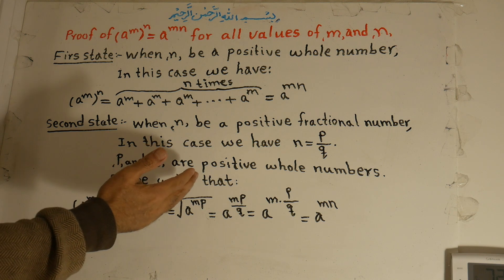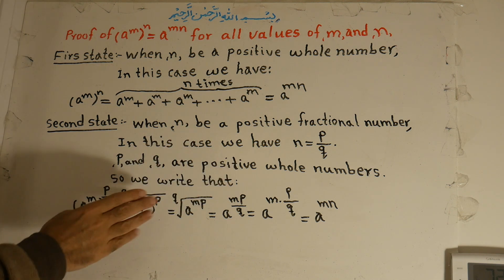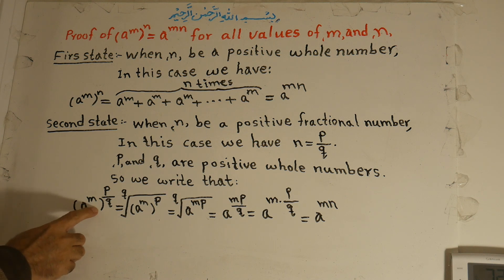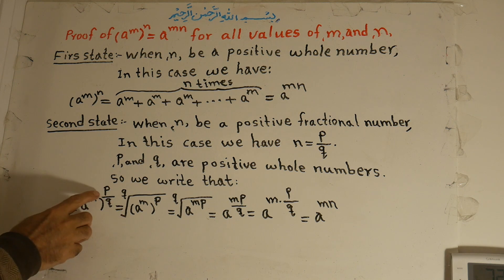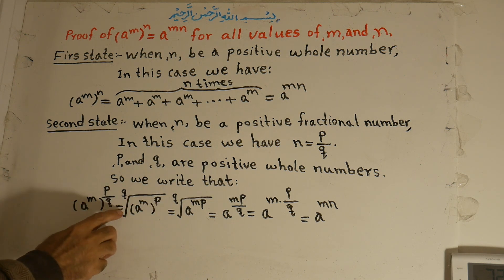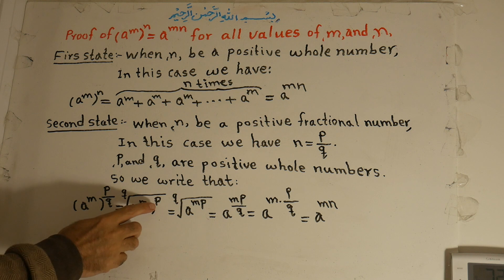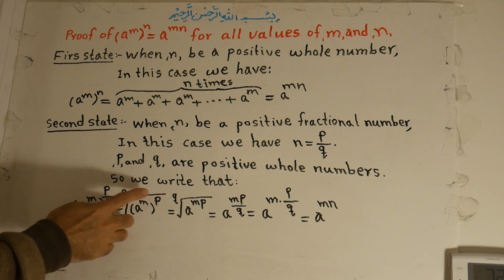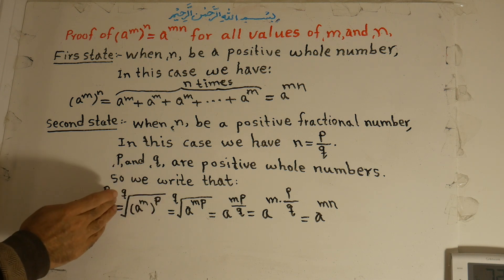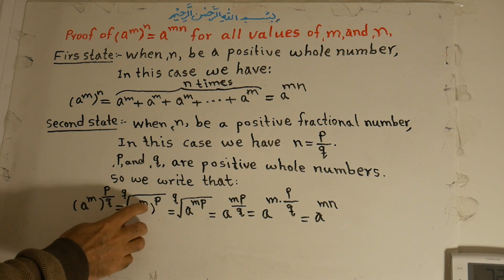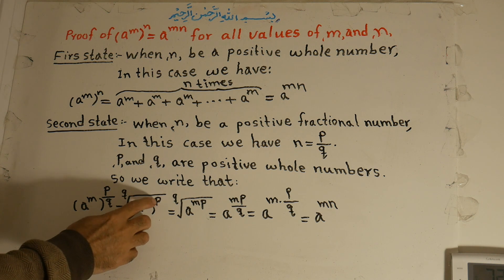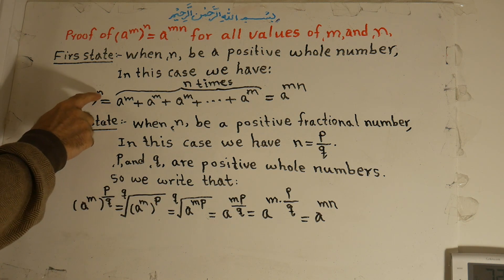P and q are positive whole numbers. So we write a to the power of m, and instead of n we write the fractional number p over q. That equals a to the power of m — since p is the numerator, we write it as the exponent: a to the power of m, all to the power of p, and the denominator q we write as a q-th root.